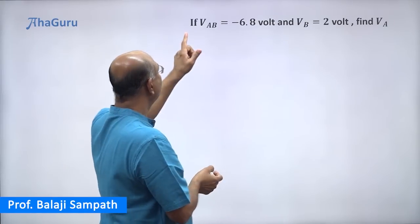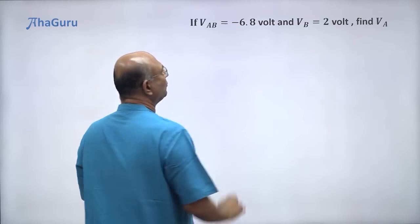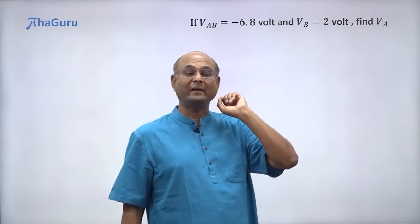Let us now look at this question. If VAB is minus 6.8 volts and VB is 2 volts, find VA.